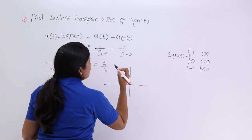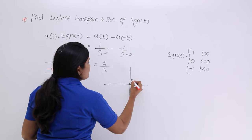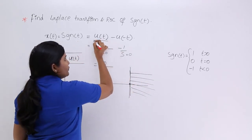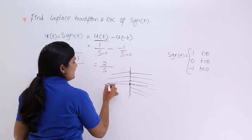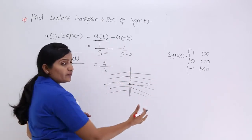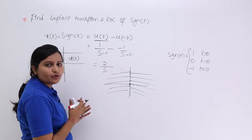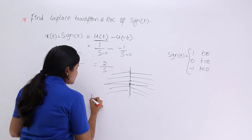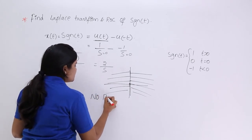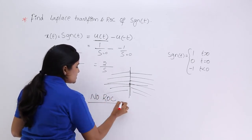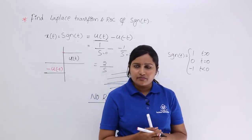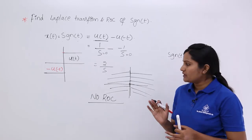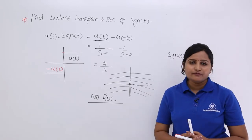If you consider that pole also, one side this is covering right-sided, and u(minus t) is covering purely left-sided. One u(t) is purely right-sided and another u(t) is purely left-sided. Here also we are not having any common ROC. For signum function also we can say no ROC is there, no region of convergence is there. Like this way we can find the Laplace transform of signum function and ROC of signum function.